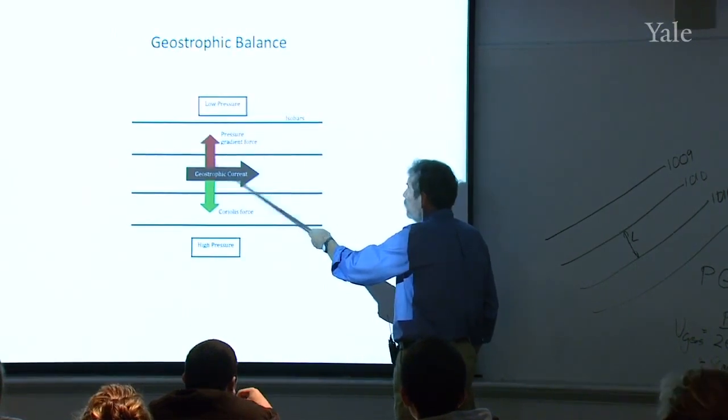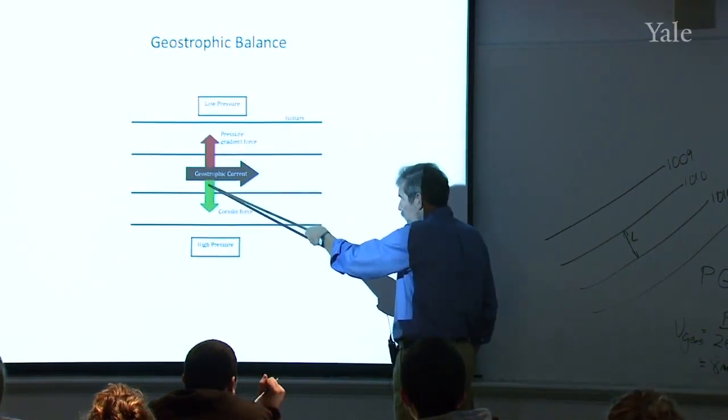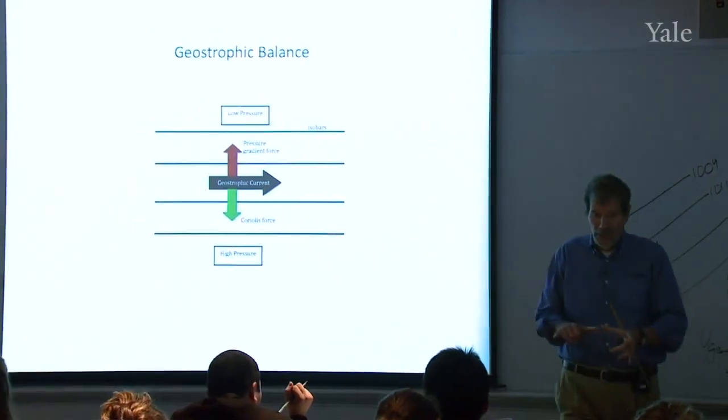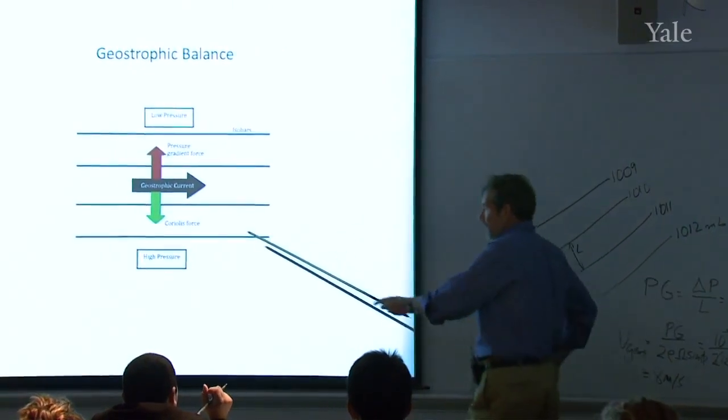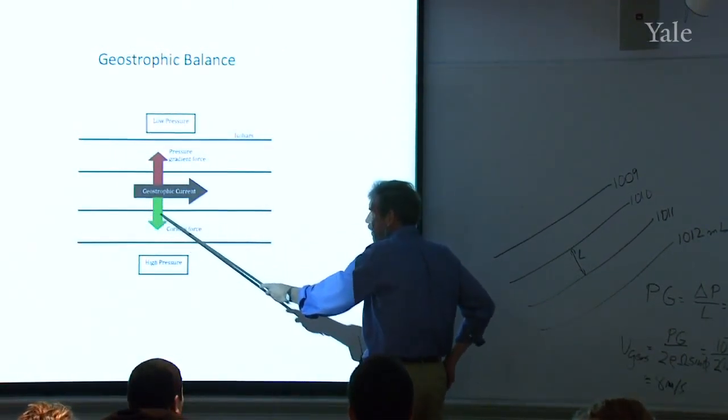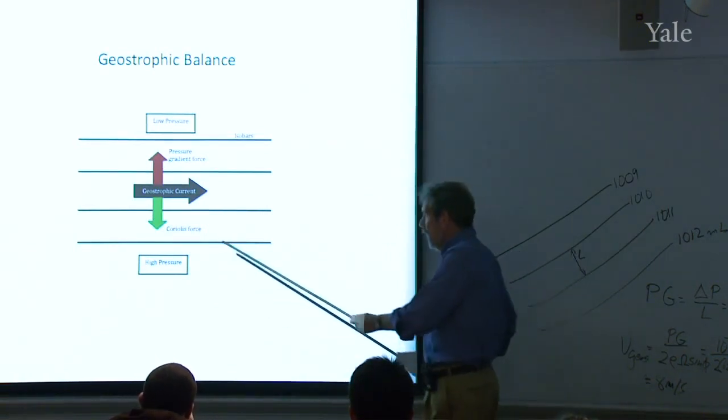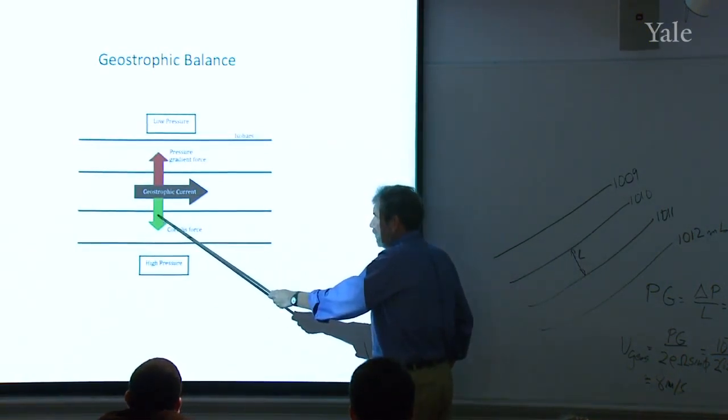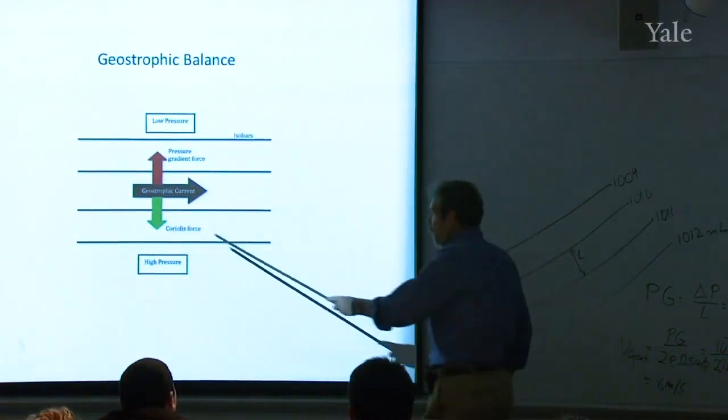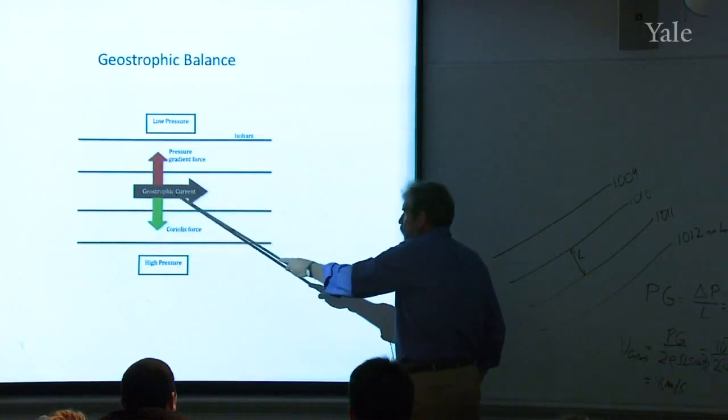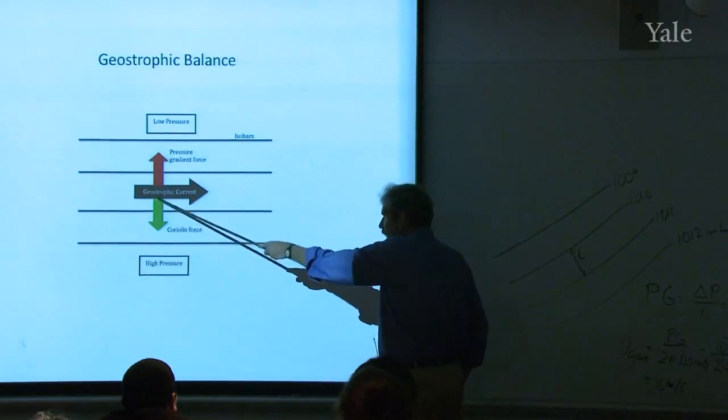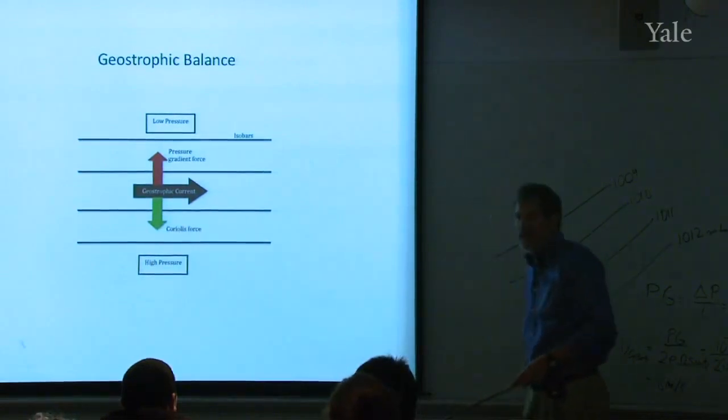Now, if it's in geostrophic balance, it has to have a Coriolis force that is equal and opposite to that. This is a vector balance, so the speed and the magnitude and the direction have to be exactly opposite to that. And now here's how the reasoning goes. If the force must be like that, then what must the air be doing? How must it be moving? It must be moving then from west to east so that the Coriolis force, which is at right angles to it, has the orientation given by the green vector.